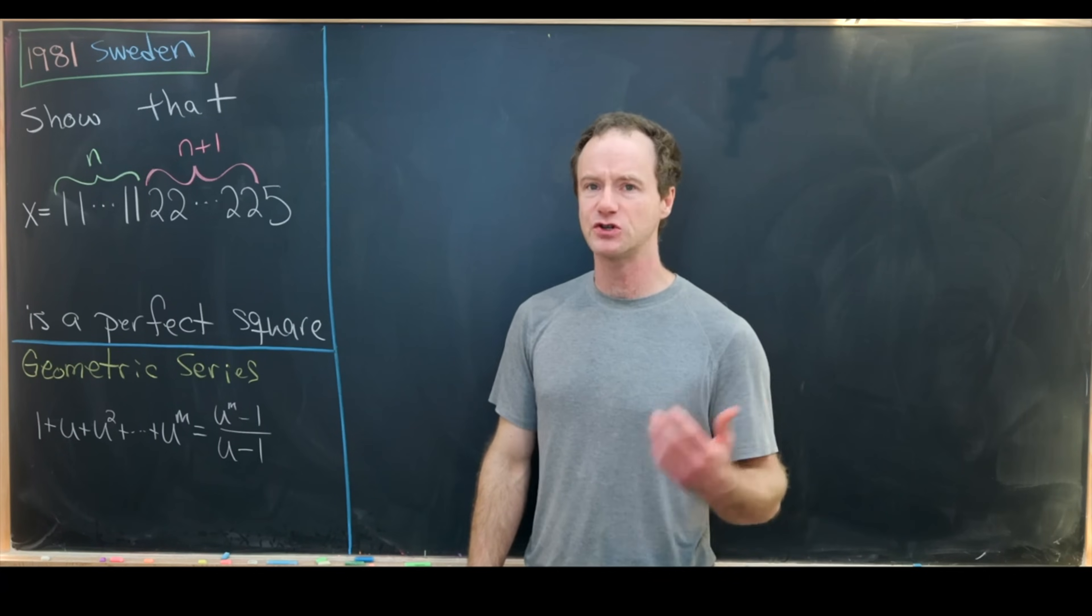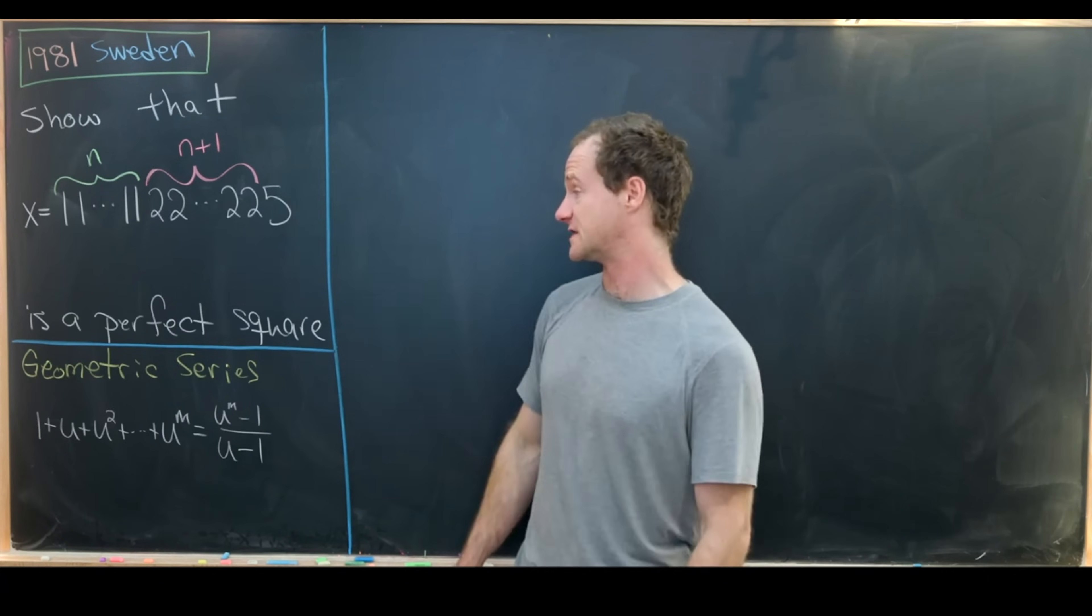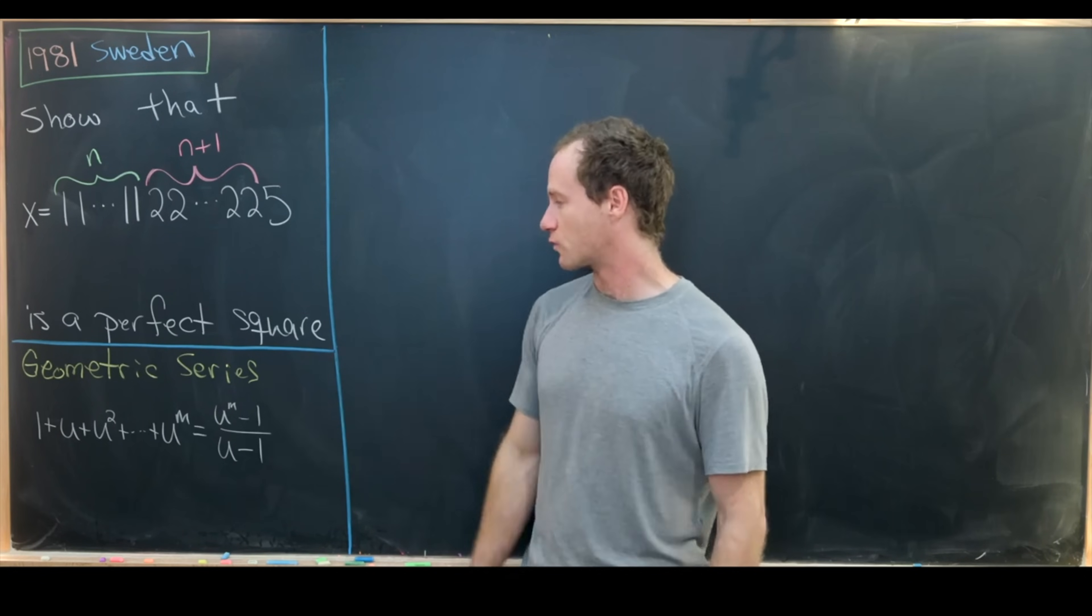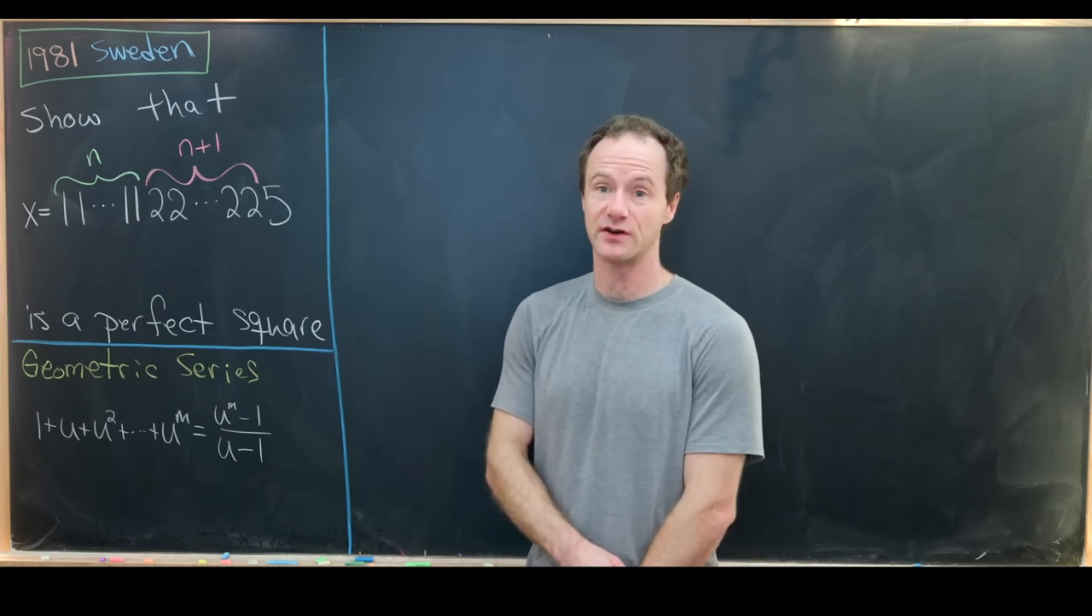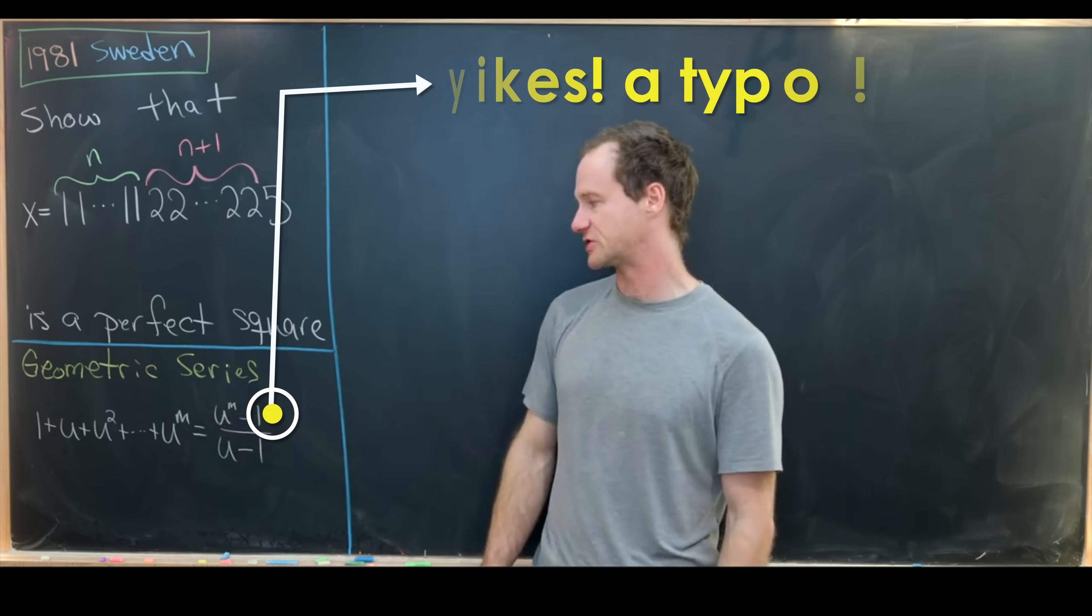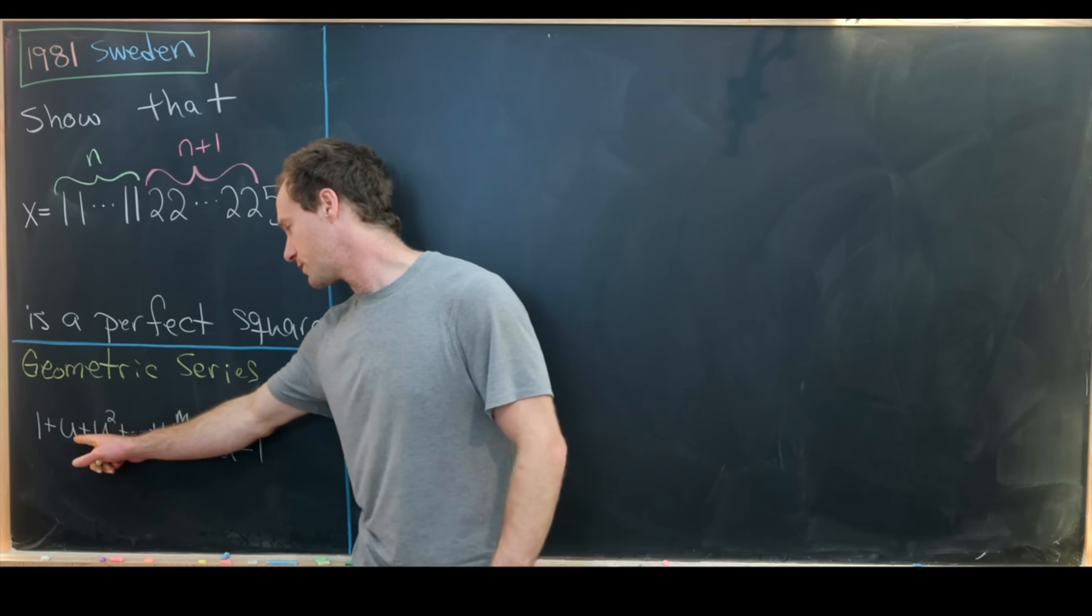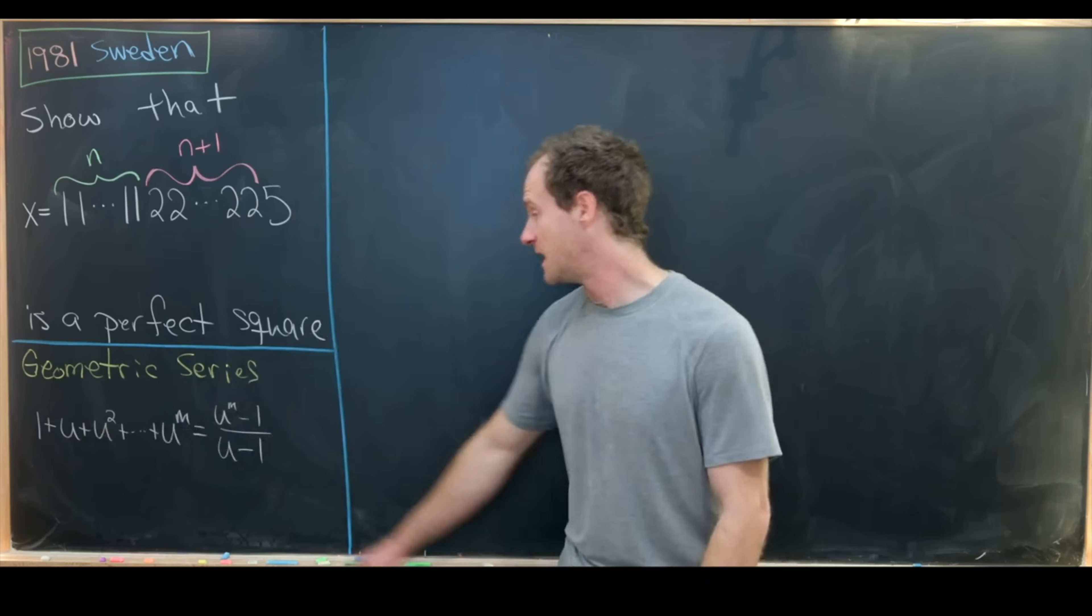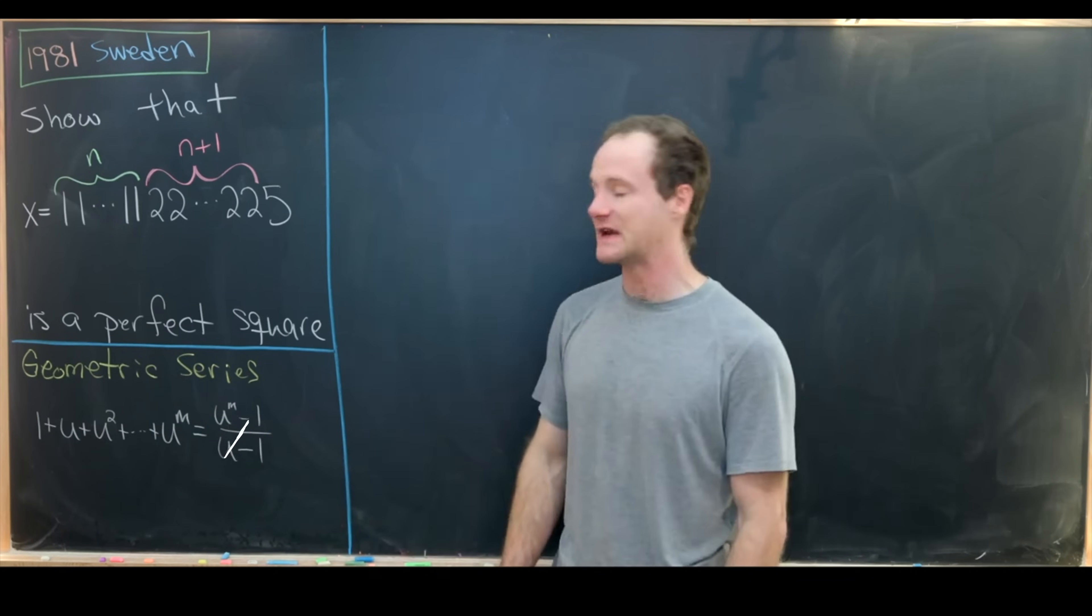And the main tool that we're going to use to show that this thing is a perfect square for any value n is by writing it as a geometric series and using the following formula for the finite sum of a geometric series. So we've got 1 + u + u² all the way up to u^m is equal to (u^(m+1) - 1)/(u - 1).